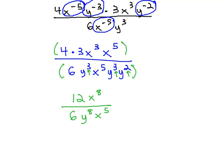Finally, we're able to reduce using the quotient rule and reducing the 12 over 6. The 12 over 6 reduces to 2, and then on the x's, the quotient rule tells us to subtract the exponents. 8 minus 5 is 3. Because the 3 is positive, the x cubed needs to be in the numerator.